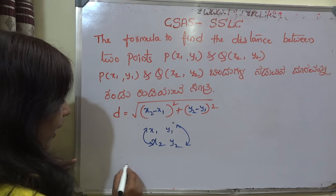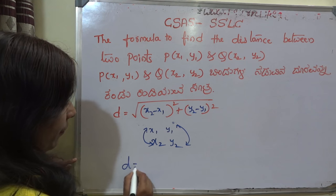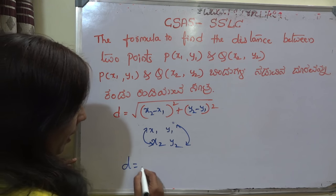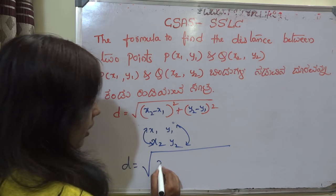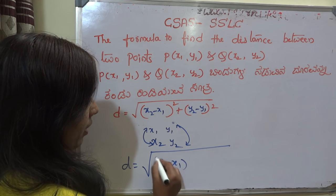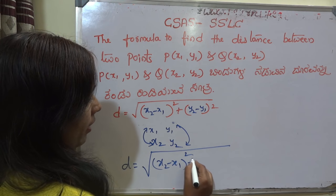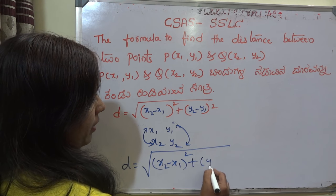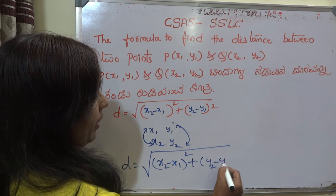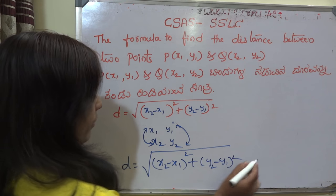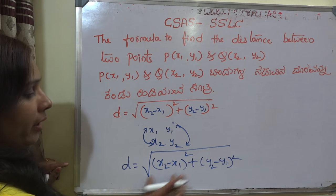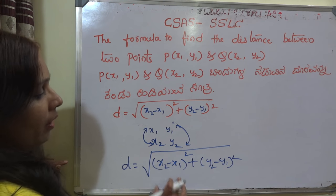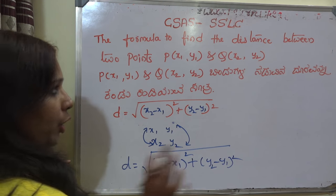If we write it in the shortest way, the formula becomes: the square root of x2 minus x1 whole square plus y2 minus y1 whole square. This is the formula to find the distance between P and Q.